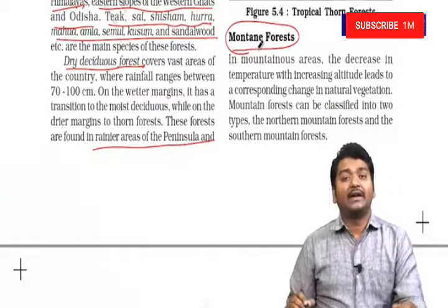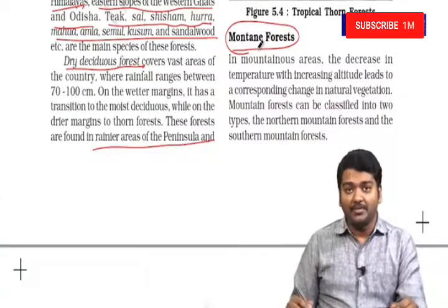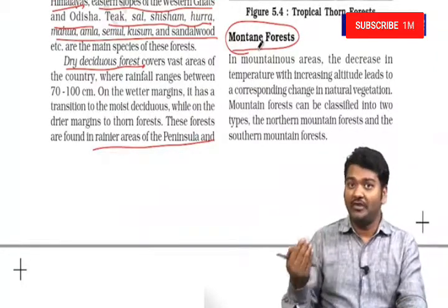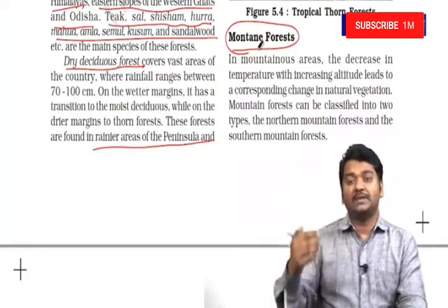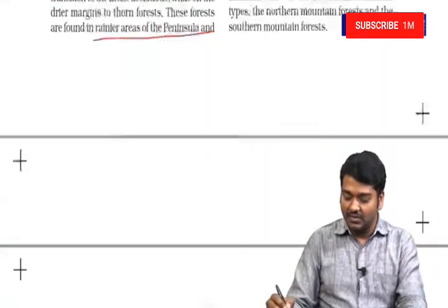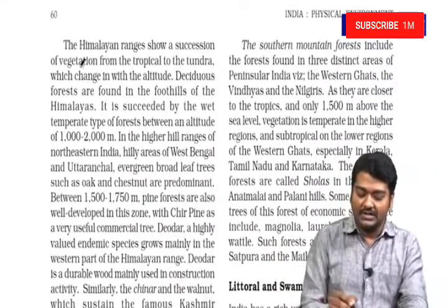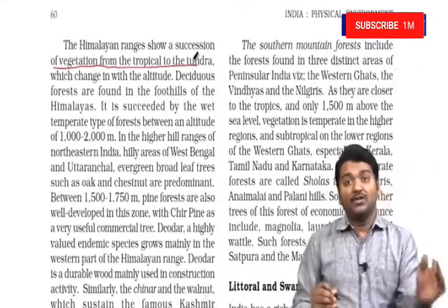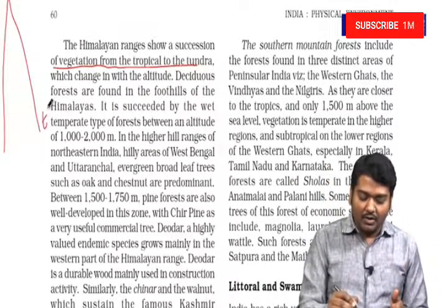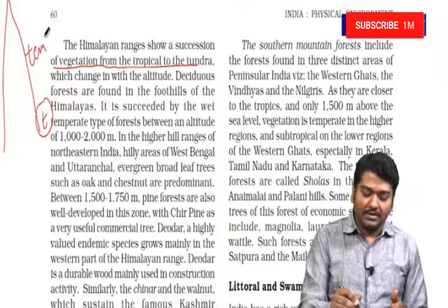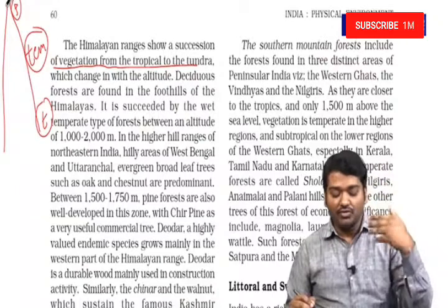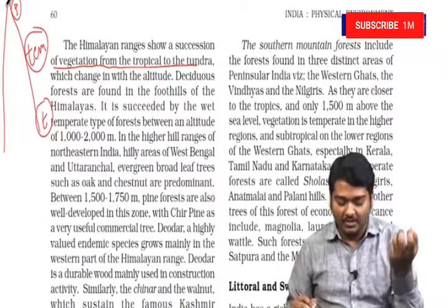Mountain forests are classified on the basis of height. In the tropical region, with increasing altitude we find different types of trees. In the Himalayas, the ranges show a succession of vegetation — at the bottom you find tropical, then temperate, and then polar vegetation. With increasing height, you usually find different vegetation being present.